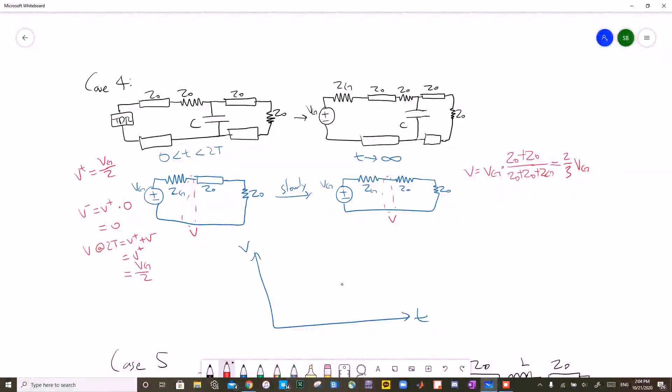Now for the final two cases, we do the same thing that we did before. So when time is from 0 to 2T, the capacitor will be shorted, therefore we have the circuit on the left. VT will still be VG over 2. Because the load side is now matched with Z naught and Z naught, V minus is now 0. Therefore the V at 2T will be V plus plus V minus, which is VG over 2.